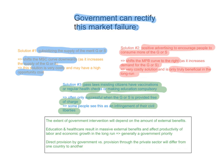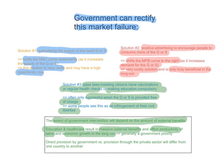The extent of government intervention will depend on the amount of external benefits. In the case of education and healthcare, these result in massive external benefits, and they do affect the productivity of labour and economic growth in the long run. So generally, education and healthcare are a government priority. Whether the government will directly provide the good or service or will encourage the private sector to provide it will differ from one country to another or from one government to another.